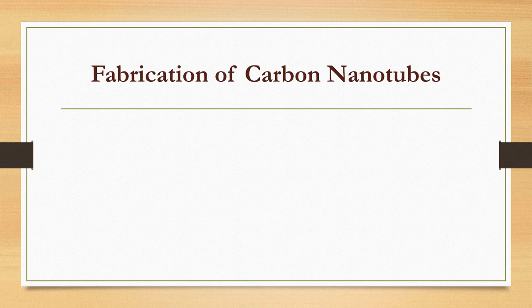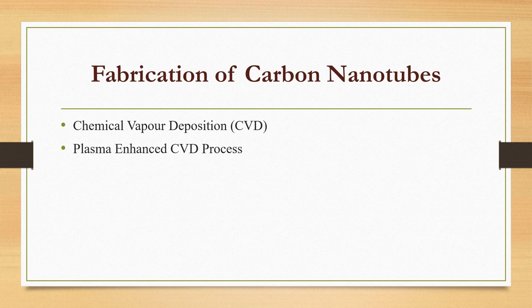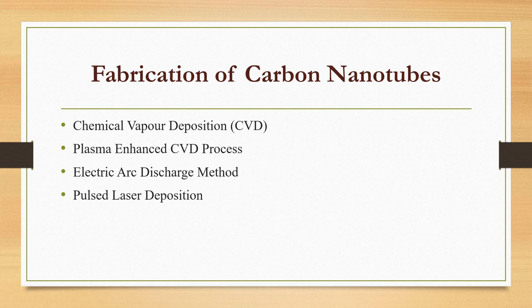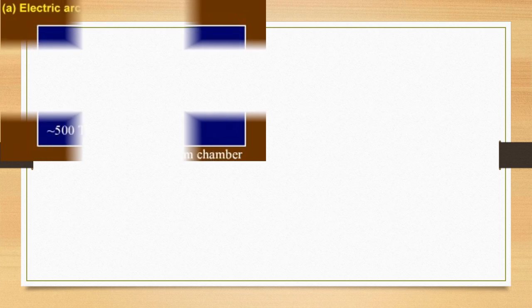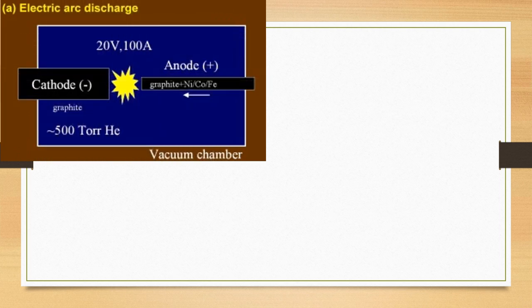Let us look at how these carbon nanotubes are fabricated. Common methods include chemical vapor deposition, plasma-enhanced chemical vapor deposition, electric arc discharge method, and pulsed laser deposition.